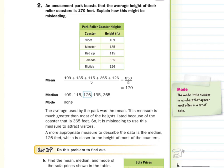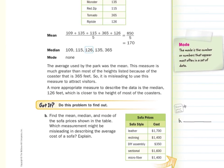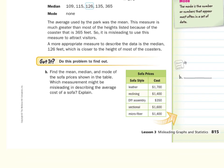Let's try this on our own, got it. Find the mean, median, and mode of the sofa prices shown in the table. Which measurement might be misleading in describing the average cost of a sofa, and explain. Let's calculate our mean.